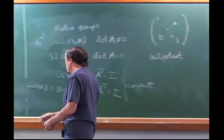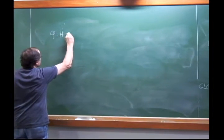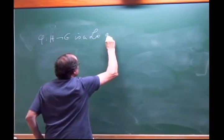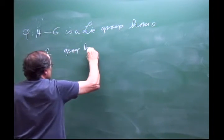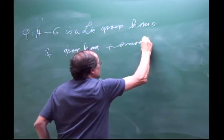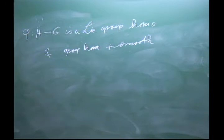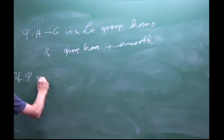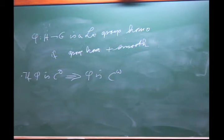Next concept: what's a Lie group homomorphism? A map φ: H → G is a Lie homomorphism if it's a group homomorphism and it's smooth. That's the compatibility condition. An amazing fact: if φ is C⁰ — only continuous — this implies φ is analytic. So again, continuous implies analytic. Kind of amazing.